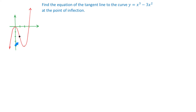Through this point let's draw a tangent line. Notice that the point of inflection is one of the few points where the tangent line crosses the graph. To find the equation of this line we need the coordinates of the point of inflection and the slope of this tangent line.